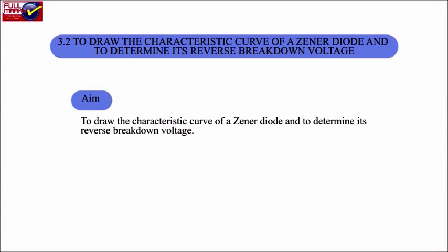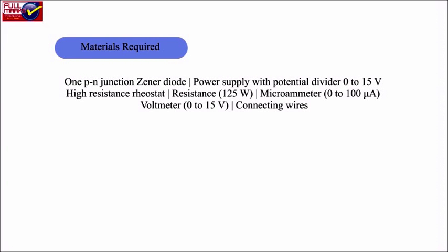Experiment 3.2: To draw the characteristic curve of a Zener diode and to determine its reverse breakdown voltage. Materials required: A PN junction Zener diode, power supply with potential divider (0–15V), high resistance rheostat, resistance of 125 ohm, microammeter (0–200μA), voltmeter (0–15V), and connecting wires.